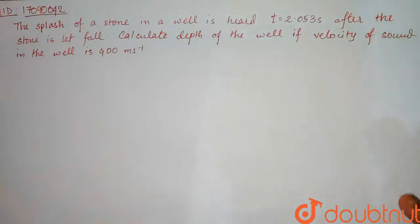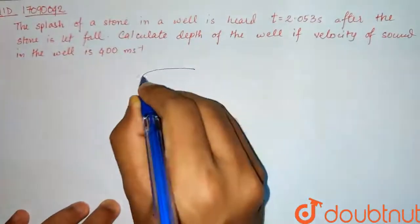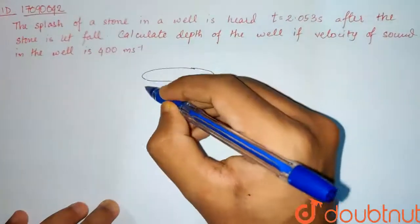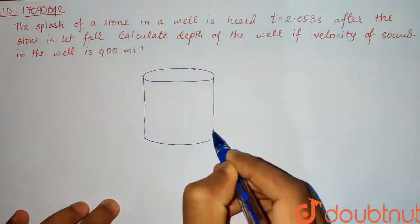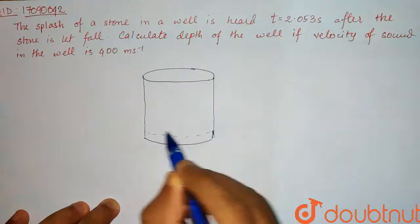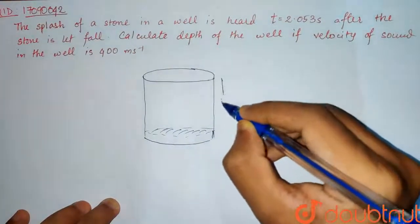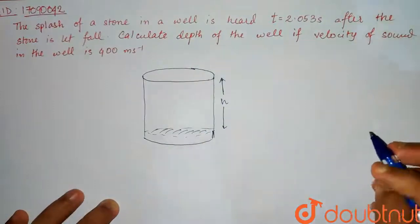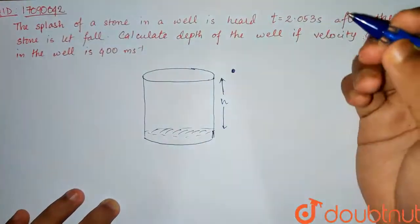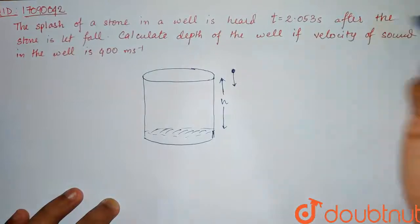This is a simple question which we will divide in two parts. Let's make a diagram first. This is your well. This is the depth of the well. And the water below is water. This is the depth of the well. Now what is happening here? We have taken a stone and we have dropped it down to freefall under the force of gravity. Freefall.